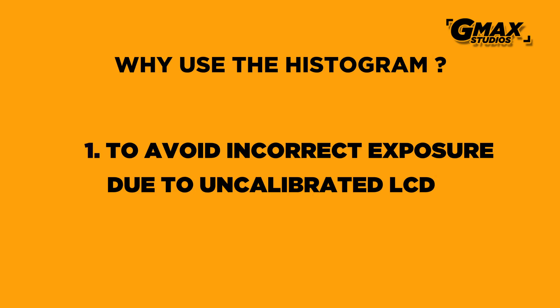why use a histogram at all when you can use the monitor to check your exposure? Well, there are three reasons. The first is that the monitor at the back of your camera is not calibrated very accurately — in fact it might differ from model to model.